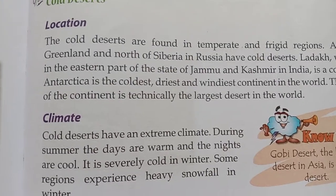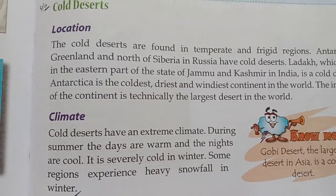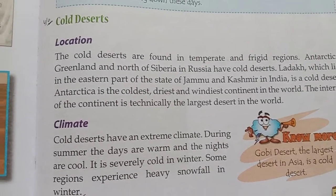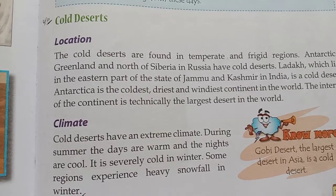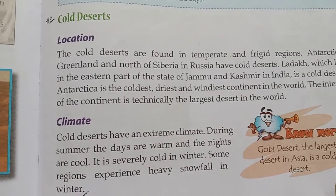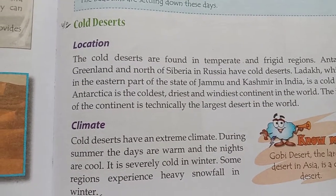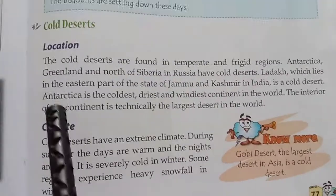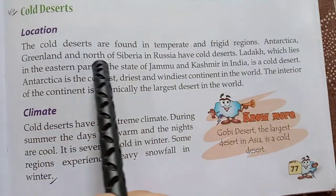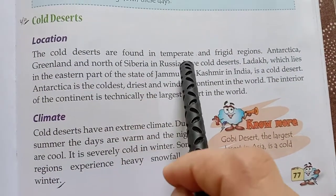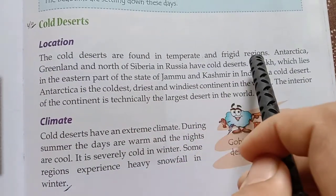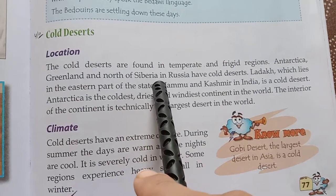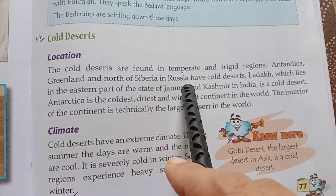Hello Class 5, today in geography class we will start a new topic. The topic is cold deserts. Please open page number 77. The cold deserts are found in temperate and frigid regions. Antarctica, Greenland, and north of Siberia in Russia have cold deserts.